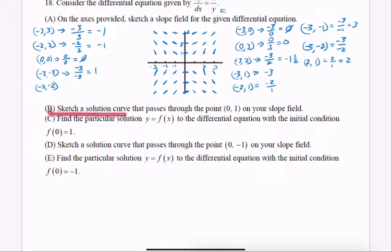Next one says sketch a solution curve that passes through 0, 1. 0, 1 is an initial condition. So 0, 1 will be right here. And we go out to the right, trying to obey all the baby tangent lines. Out to the left. There you have it.